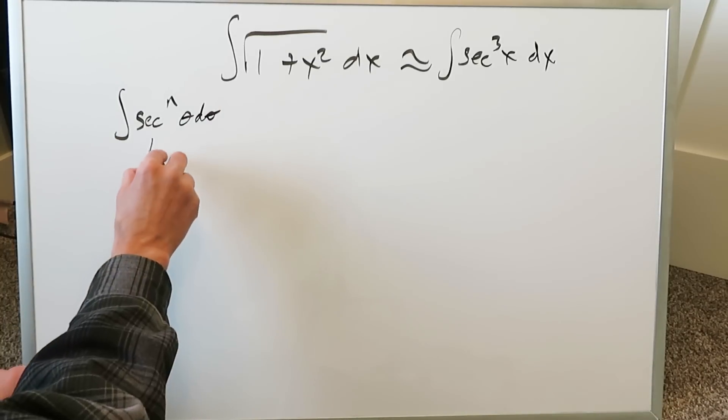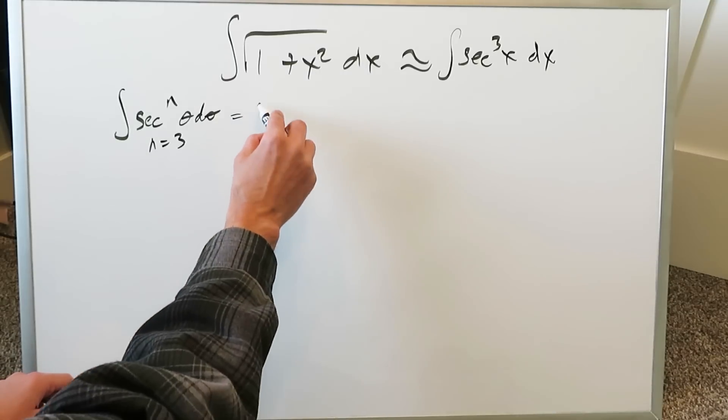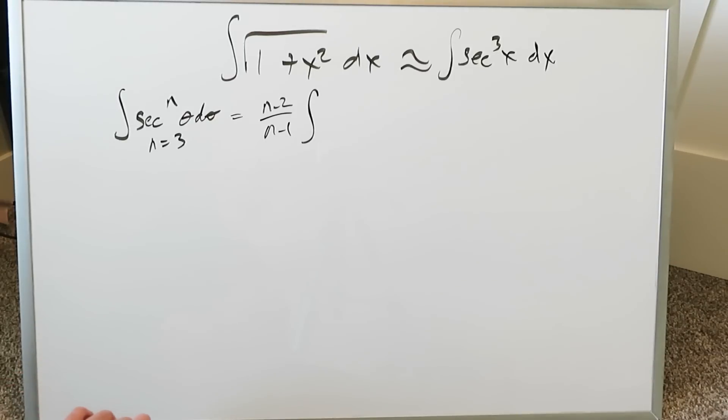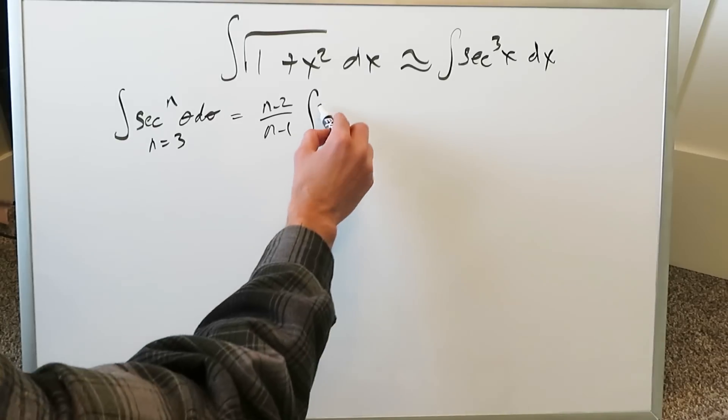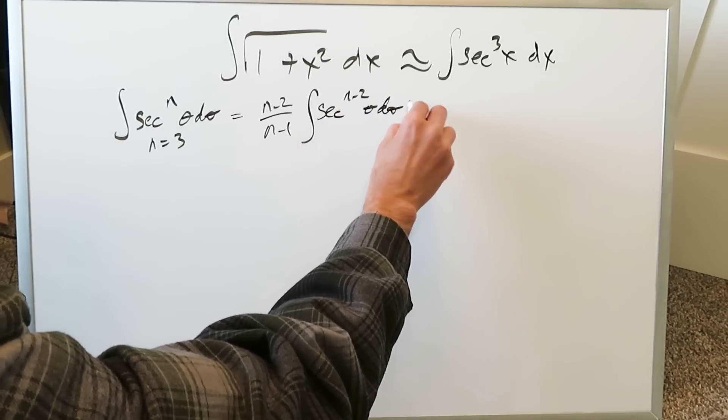Here in our particular case n will equal 3 and we'll show you why that will be the case. The reduction formula will be this. You'll do n minus 2 over n minus 1. Remember I'm showing you a way of doing it. Someone might say there's another way. I'm just showing you a relatively good way because you can rely on this. Here you'll have integral of secant n minus 2 theta d theta plus...